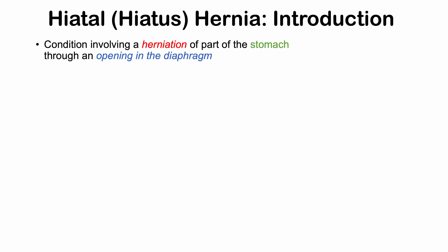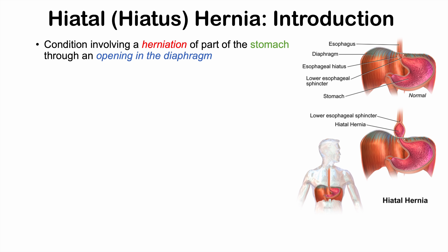A hiatal hernia is a condition involving a herniation of part of the stomach through an opening in the diaphragm. The esophagus travels through a hole in the diaphragm to join to the stomach, and that hole in the diaphragm is known as the esophageal hiatus. This is where we have herniation of the stomach through that hole, through the esophageal hiatus.